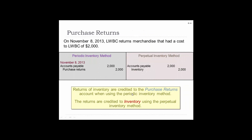4. Purchase returns. Here's what a transaction would look like with a purchase return. On November 8, 2013, LWBC returns merchandise that had a cost of $2,000. Using periodic, we debit accounts payable because we won't have to pay this, and credit purchase returns. Using perpetual, we debit accounts payable and credit inventory.